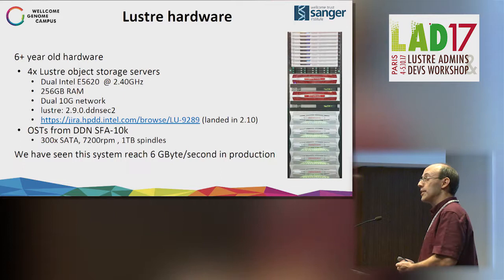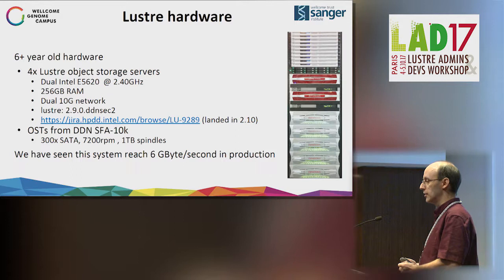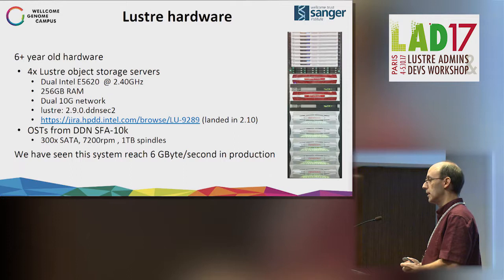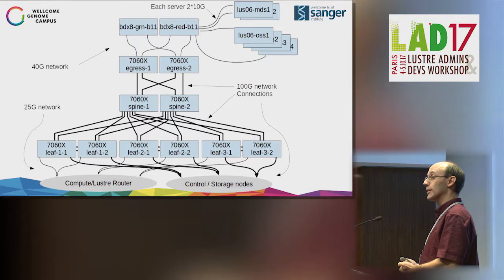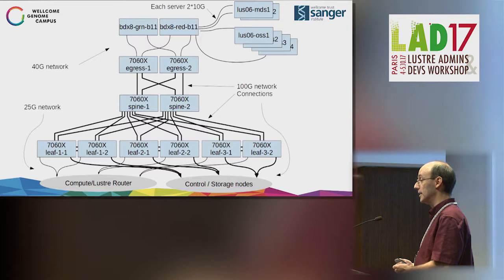The hardware we're using for this proof of concept is a DDN SFA 10K with four OSSs. All servers have dual 10 gig networking, so we're looking at an absolute headline of eight gigabytes per second, and when it was in production with our traditional compute farms, we've seen six gigabytes per second. We're using a DDN version of Lustre 2.9 with one fix backported from 2.10, to do with a missing null-terminated file system name. The Lustre file system is connected into our legacy core switch with 2x10 gig into each Lustre server.